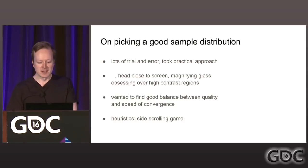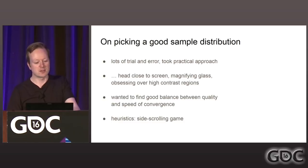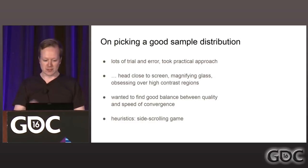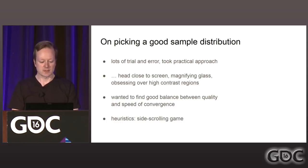I mentioned I would get back to the sample distribution. For us this took a lot of trial and error. I took a very practical approach — spent some weeks with my head close to the screen, using the Windows magnifying glass fully zoomed in, obsessing over high-contrast regions. I wanted a really good balance between quality and speed of convergence. At the time we were targeting 30 fps and now we're at 1080p 60. There was this scene in the game where the boy could run on a low-inclination slope, and I would run up and down again and again with different distributions to find a nice transition for a single sub-pixel line under a lampshade.